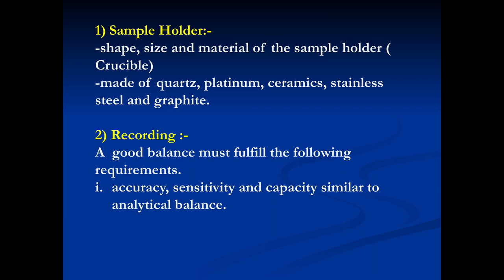The shape, size, and material of the sample holder (crucible) have an important effect on the shape of the TGA. The size and shape depend on the nature, weight of the sample, and the maximum temperature range to be used. Sample holders are made of quartz, platinum, ceramics, stainless steel, and graphite.